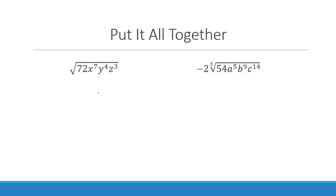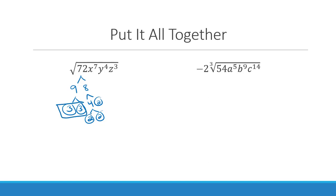Let's put all of this together to simplify a full radical expression. Using the factor tree, I can take out a 3 and a 2, so 3 times 2 gives me 6 out front, and the square root of 2 is left over. For the variables: 2 goes into 7 three times with a remainder of 1 left over; 2 goes into 4 evenly — twice with no remainder; 2 goes into 3 one time with a remainder of 1 left over. That gives our simplified radical.